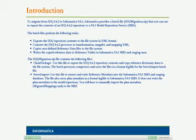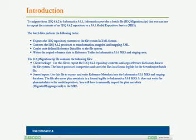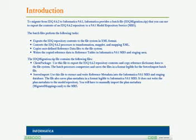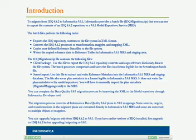The IDQMigration.zip file contains the following files. Client package: use this file to export the IDQ 8.6.2 repository contents and copy reference dictionary data to the file system. The batch process compresses and saves the files in a format legible for the server import batch file. Server import: use this file to extract and write reference metadata into the Informatica 9.0.1 MRS and staging database. The file also saves the plan metadata in a format legible to Informatica 9.0.1 MRS. It does not write the plan metadata to the model repository — you will have to manually import the plan metadata (migrated_mappings.xml) to the MRS.